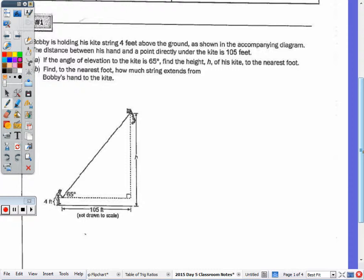Bobby is holding his kite. His kite's string four feet above the ground, as shown in the diagram. The distance between his hand and a point directly under the kite is 105 feet. If the angle of elevation to the kite is 65 degrees, find the height of his kite to the nearest foot. Find in the nearest foot how much string extends from Bobby's hand to the kite. We're finding H, which is here, but we also are going to find how much string extends from his hand to the kite, so I'm going to call that S. The picture's there, which is awesome. Out of the notes, I believe three out of the four have a picture provided, and then you have to draw the picture for the last one.